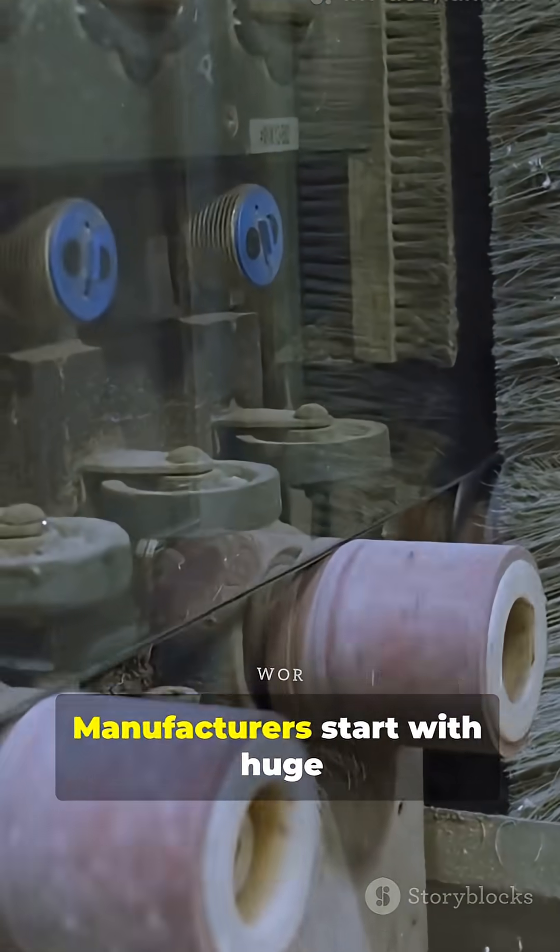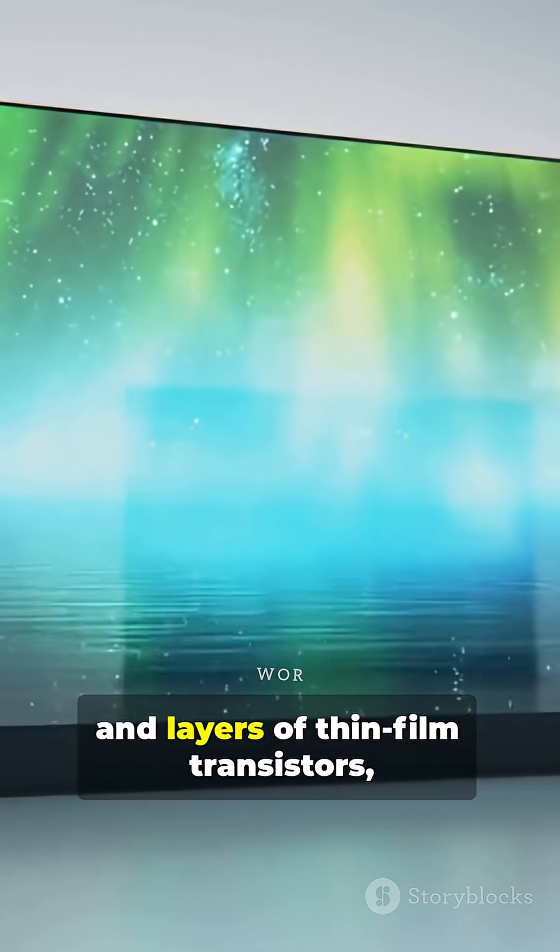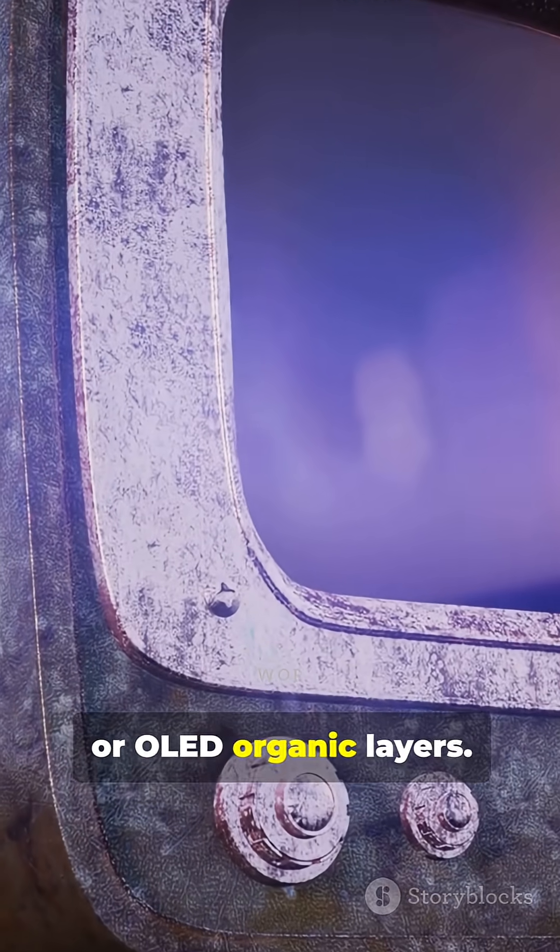Step 1. Panels and glass. Manufacturers start with huge sheets of glass and layers of thin film transistors, or OLED organic layers.